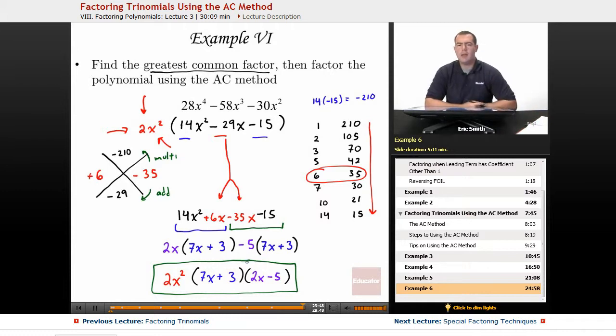So using the guess and check method and the AC method can be two great ways to factor your polynomials. I suggest using the reverse foil method if the numbers aren't that big or your leading coefficient is 1. If it starts to get a little bit more complicated, then feel free to use this AC method to really break it down. Thank you for watching. Educator.com.